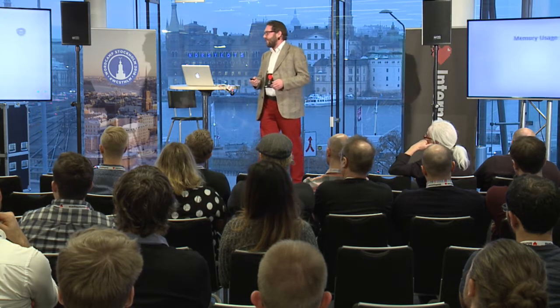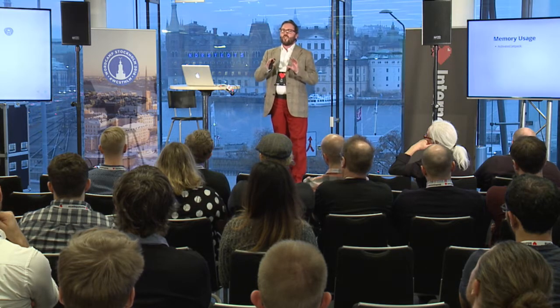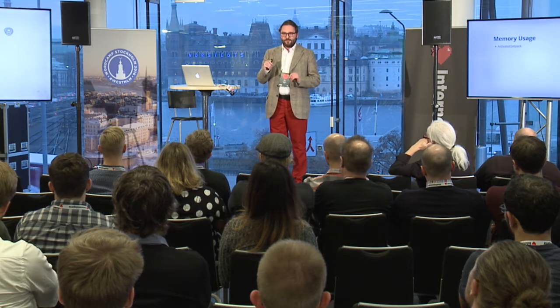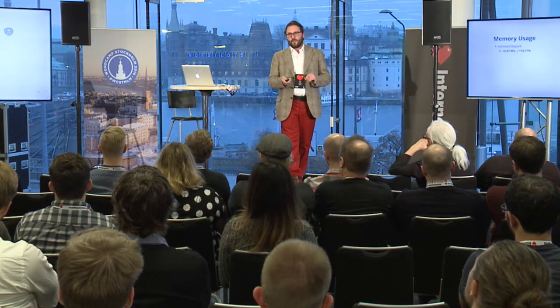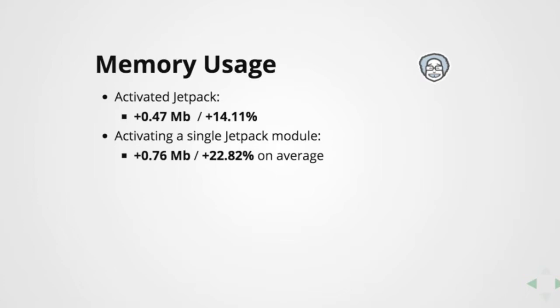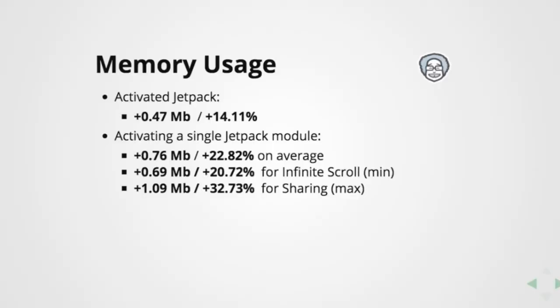So the results were as follows. First, memory usage. With just activating Jetpack — nothing else, just download and press activate — it adds almost half a megabyte of memory usage. That's a 14% increase on a simple site. If you activate one Jetpack module, on average it grows to almost three-quarters of a megabyte, which is almost a 23% increase. The least increase comes from infinite scroll, and the most comes from the sharing module.